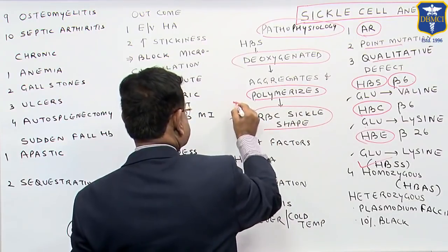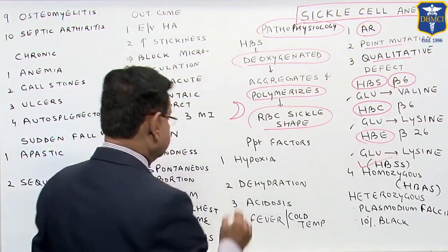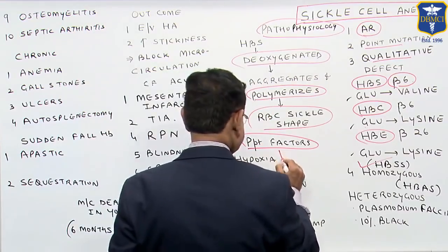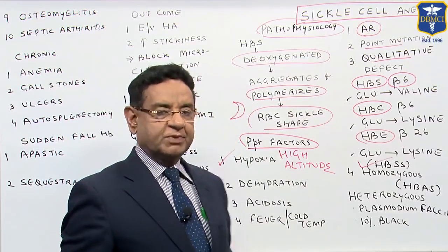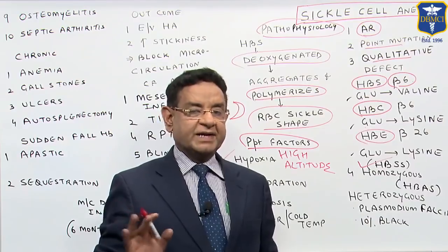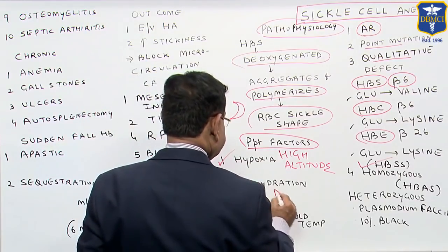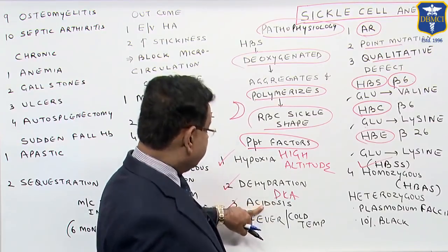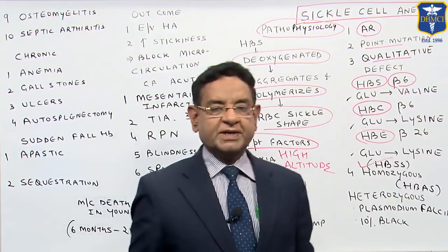What are the factors which can precipitate this sickling? First, hypoxia — patients going to high altitude are more likely to suffer. Anything leading to dehydration — sickle cell patients should always keep themselves hydrated and avoid high hilly areas. Acidosis — sickling is very common in diabetic patients having DKA, where marked dehydration is also present. Very high-grade fever or very cold temperatures also precipitate sickling.